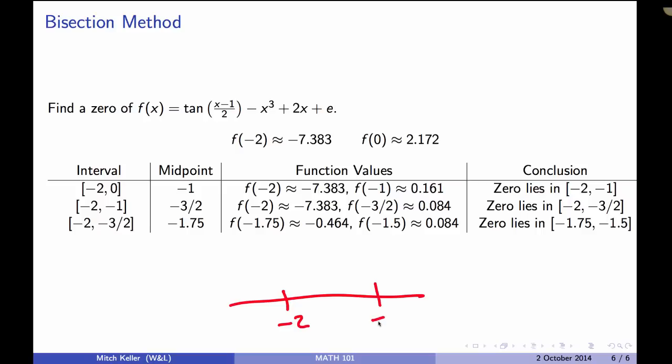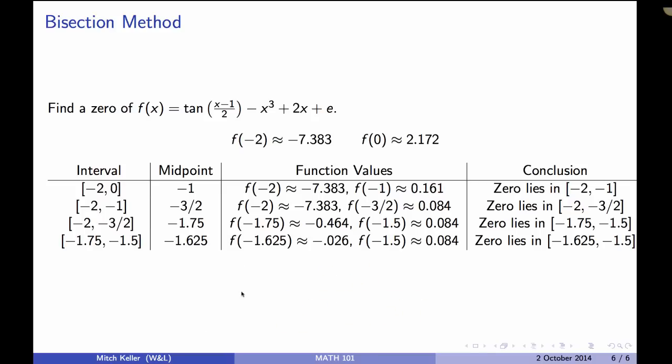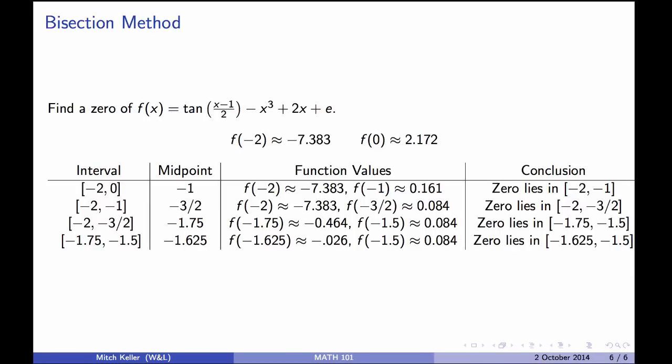Again -2, -1.5 so here we've got -1.75 and now we find that f(-1.75) is negative, f(-1.5) is positive so the 0 has to be between -1.75 and -1.5. Again repeat this process, the midpoint is -1.625 and we find out that now we're really close, and so we know that the 0 lies between -1.625 and -1.5. We could repeat this a few more times but we've already honed in fairly close that we're probably around maybe -1.6 or somewhere thereabouts and we can stop there for the moment.